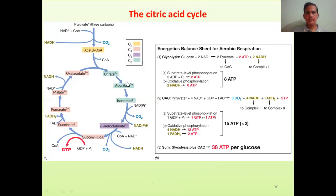Let's have a look at this particular cycle. Here we have acetyl-CoA, which is a 2-carbon molecule from which CoA is removed, giving an acetyl group that binds to this 4-carbon molecule oxaloacetate, leading to the formation of a C6 molecule. Modification of this ultimately leads to isocitrate, from which one molecule of CO2 is released and NAD is reduced to NADH, giving a 5-carbon compound. From there, again NADH is formed and we get a C4 compound.